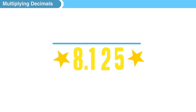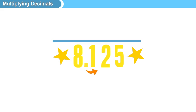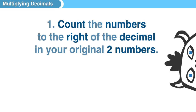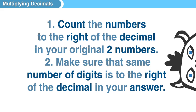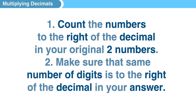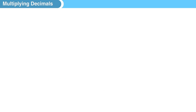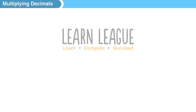Now you better be sure that on a standardized test they are going to have those same numbers with the decimal point in a completely different spot. So it might say 81.25 or 0.8125, something like that. Don't be fooled. All you have to do is count the numbers to the right of the decimal in your original two numbers and then make sure that same number of digits is to the right of the decimal in your answer. And that's it, that's all you have to remember. Multiply decimals.